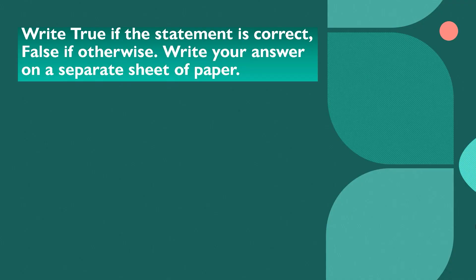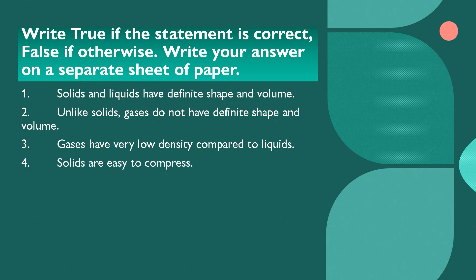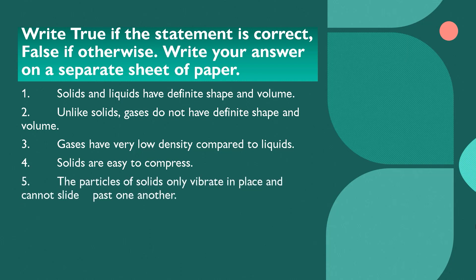Before we start, let us have a warm-up. You may write it on your paper — just write true or false. Number one: solids and liquids have definite shape and volume. Number two: unlike solids, gases don't have definite shape and volume. Number three: gases have very low density compared to liquids. Number four: solids are easy to compress. Number five: the particles of solid only vibrate in place and cannot slide past one another.